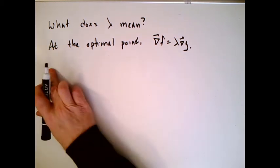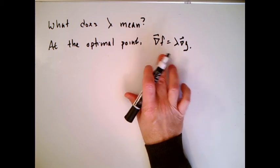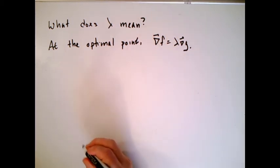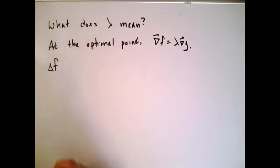What we're going to get started is, we know with Lagrange multipliers, at the optimal point, the gradient of f is equal to lambda times the gradient of g. And what they're interested in is the change in the profit between the old optimal point and the new optimal point.